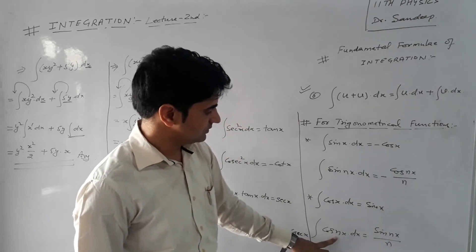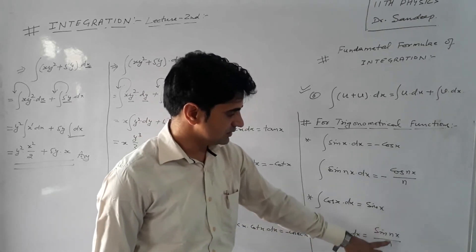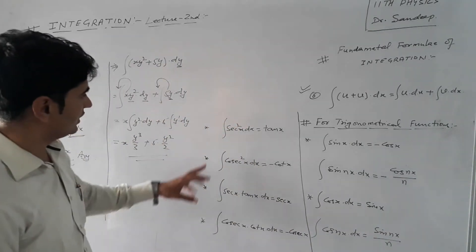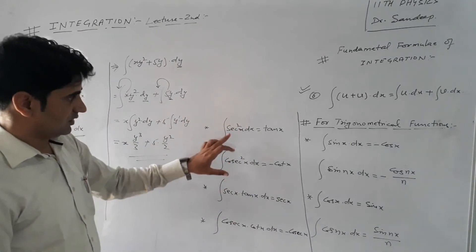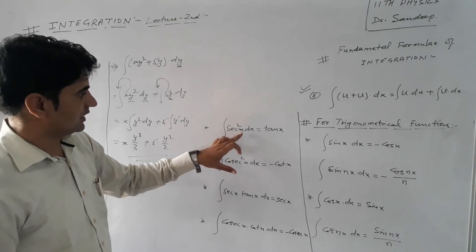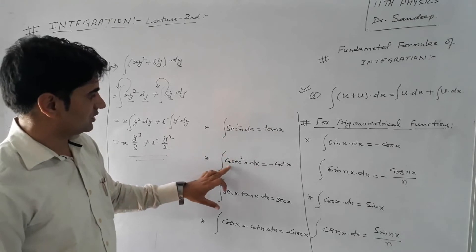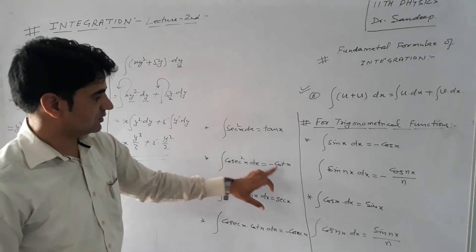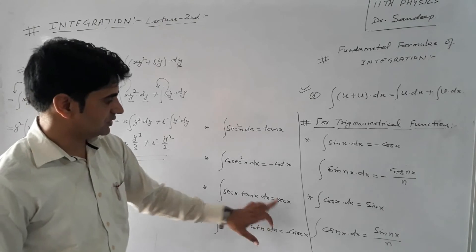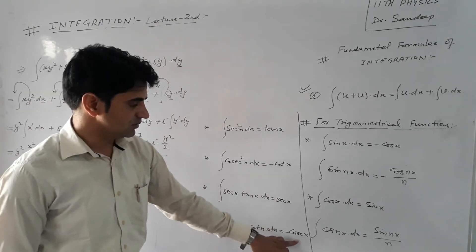If we have the integral of cos 5x into dx, then the solution would be sin 5x by 5. These are different identities for trigonometric functions. The integral of secant squared x into dx equals tan x. The integral of cosecant squared x into dx equals minus cot x. The integral of secant x times tan x into dx equals secant x.